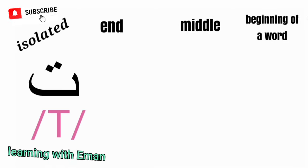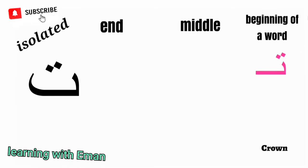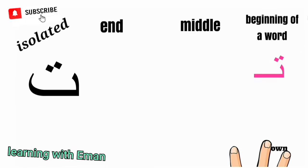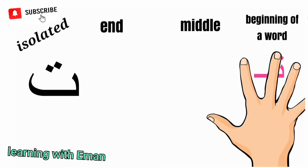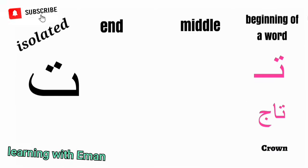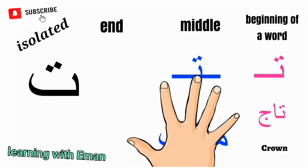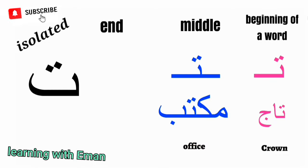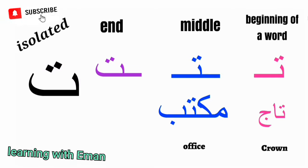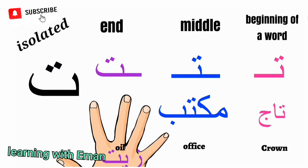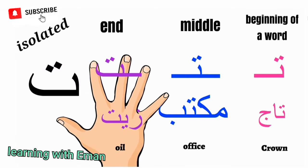Ta corresponds to the English letter T but it's softer. At the beginning of a word, like in a word meaning crown. At the middle of a word, like in a word meaning office. At the end of a word, like in a word meaning oil.